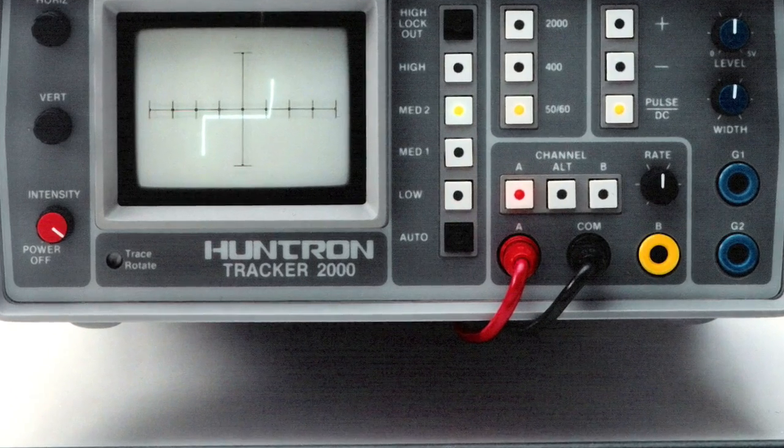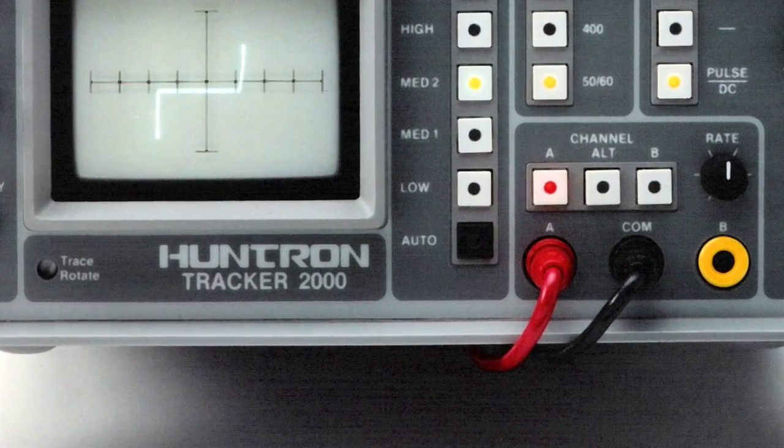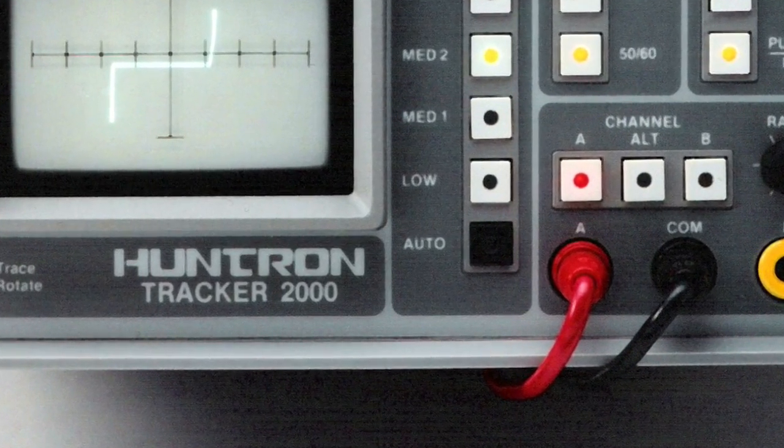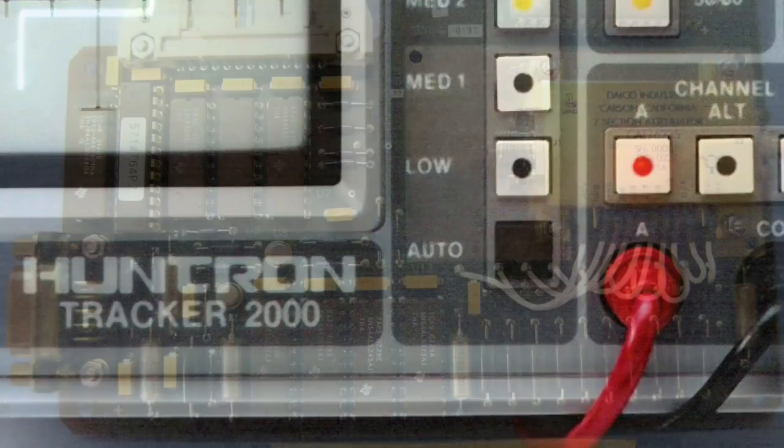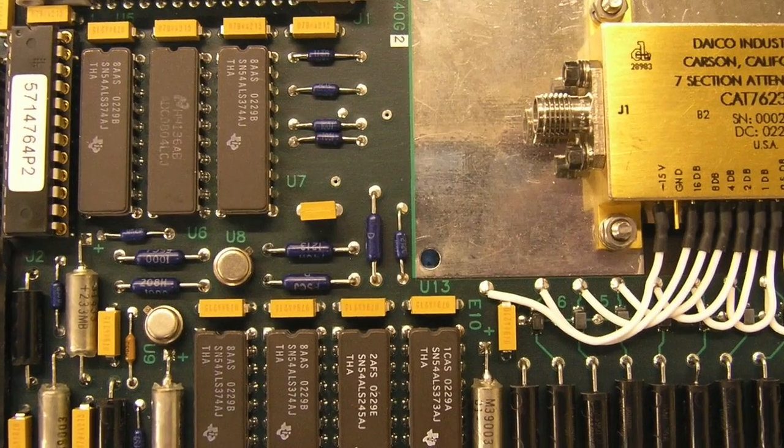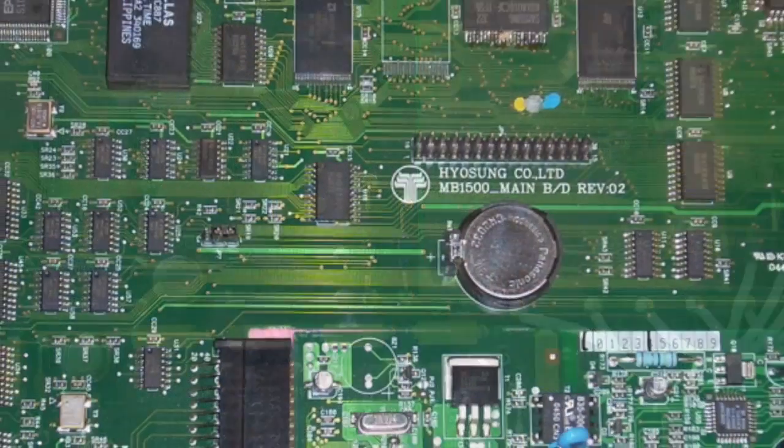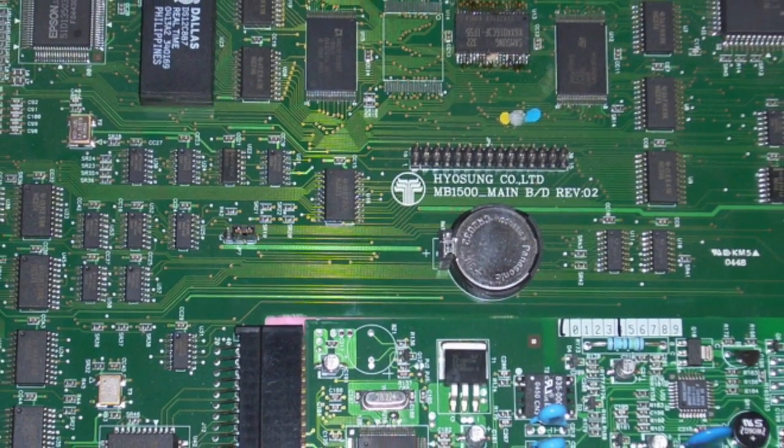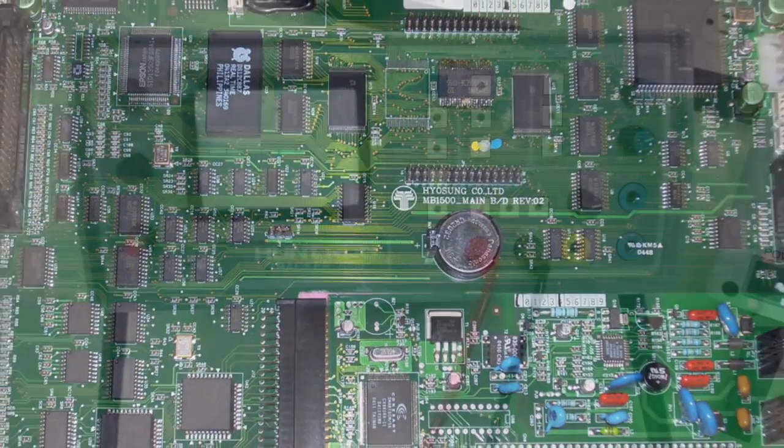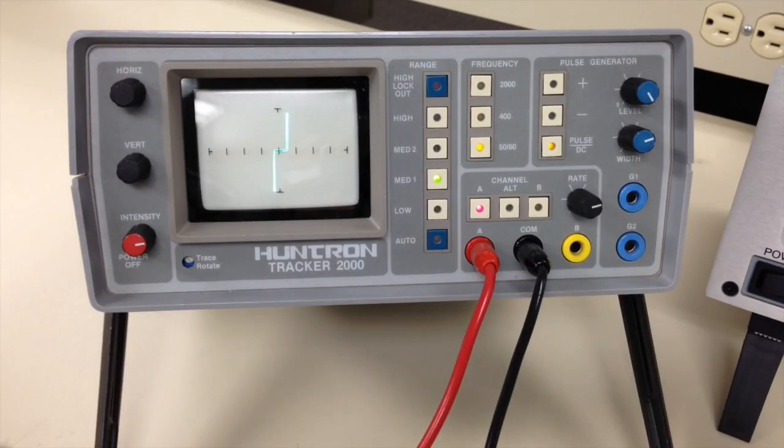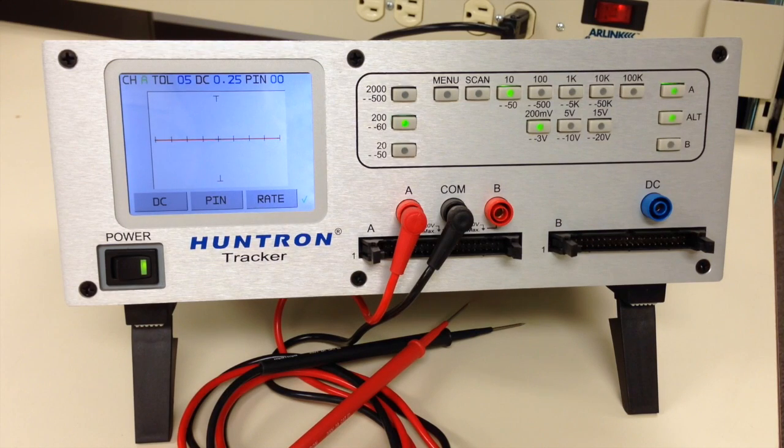Huntron manufactured thousands of the Tracker 2000 from its introduction in 1984 to 2005 when it was discontinued. While the Tracker 2000 can still be a useful tool on some older PCBs, it is less so on today's lower current CMOS surface mounted components. This video addresses the commonly asked questions regarding the differences between the Tracker 2000 and the Tracker 2800.